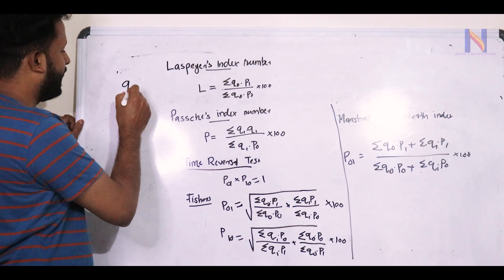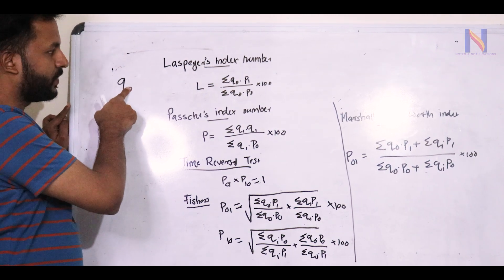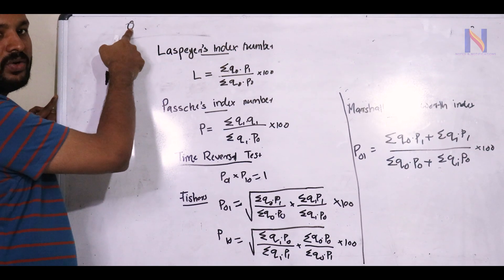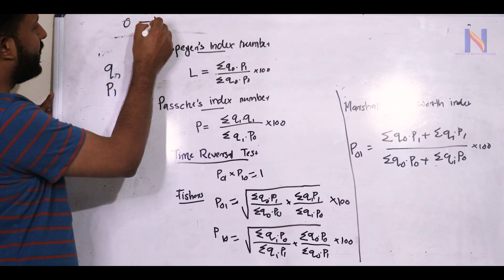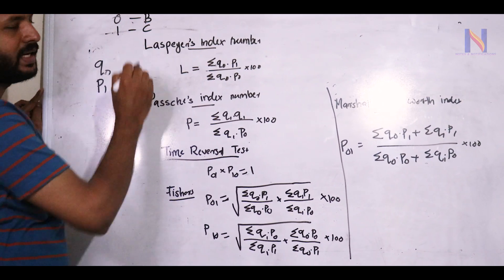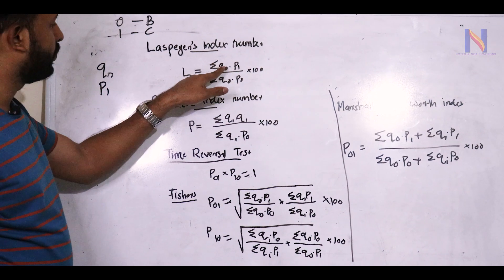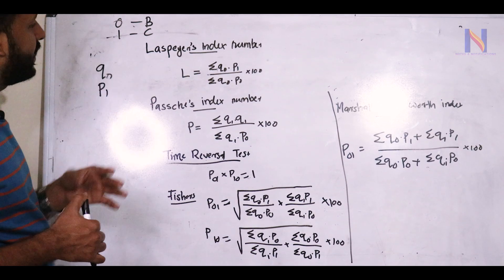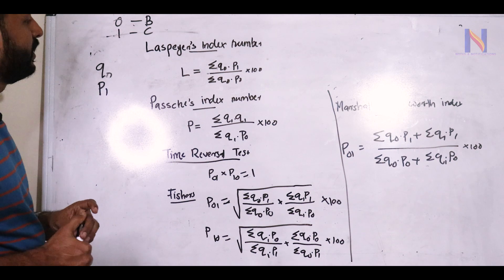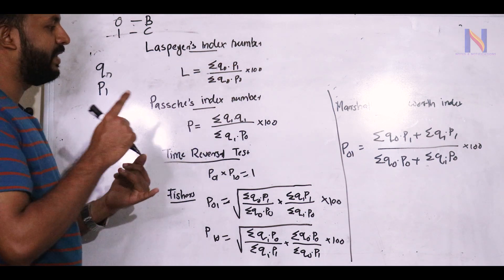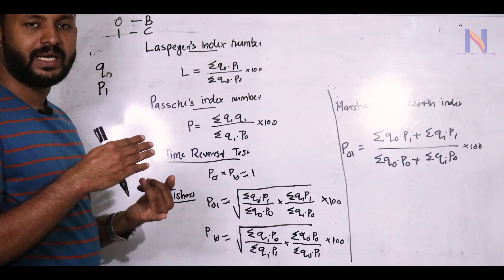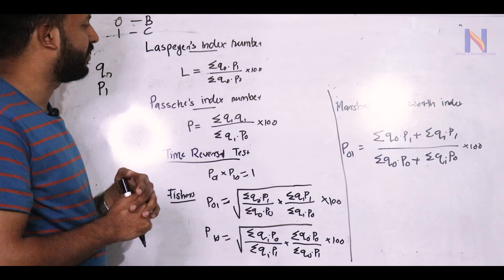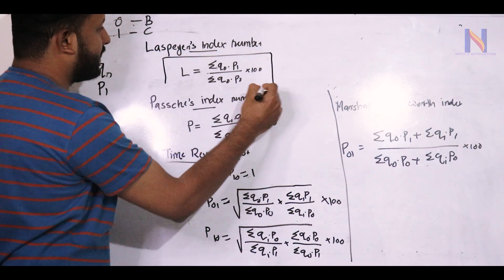Q0 is the base year quantity. 0 represents the base year and 1 represents the current year. P1 is the current year price, and P0 is the base year price. Substitute the values from the question paper directly into the equation.